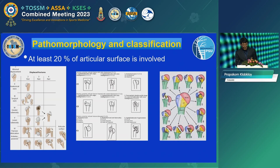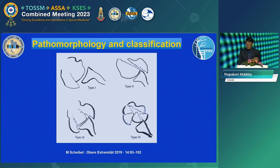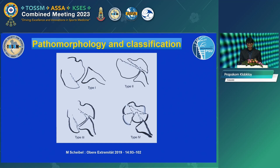For classification, we normally use the Neer classification, AO, or Hertel classification. Recently, Markus Scheiber from Germany proposed a new classification for head-split fractures. Type 1: the fracture lies within the posterior half of the humerus, with the larger head fragment located anteriorly. Type 2: the fracture lies within the anterior half, with the main fragment posteriorly. Type 3: there is a loose, free-floating fragment in the central part of the humerus. Type 4 is the combined head-split fracture.